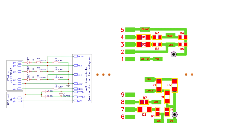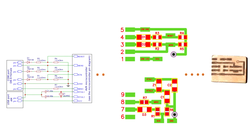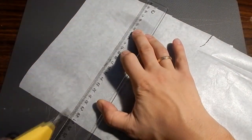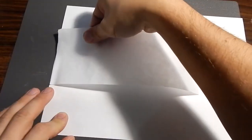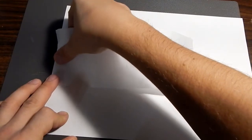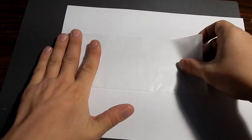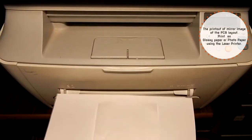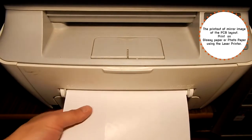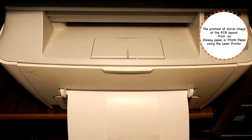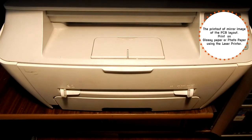Now it's time to proceed to the production of the programmer. The first step is to make a printed circuit board. You can make your own circuit board at home using the toner transfer method. Use a circuit board designing software to convert the circuit schematic diagram into a PCB layout. Make a printout of the mirror image of the PCB layout, printed on glossy paper or photo paper using a laser printer.